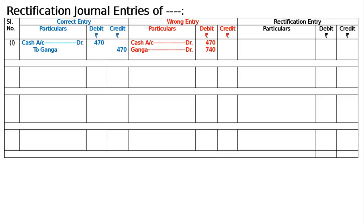Ganga should come in the credit at 470 and the Ganga debit of 740 should be cancelled by crediting it. There is no error in other accounts, hence the rectification entry is: suspense account debited to Ganga 1210. Ganga has to be cancelled by 740 debit and has to come in credit as 470, hence suspense account debited to Ganga 1210, being rectification entry — as Ganga should be credited 470 but was debited 740.